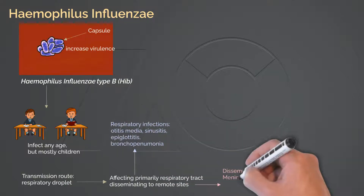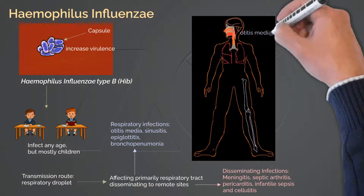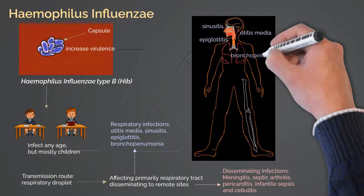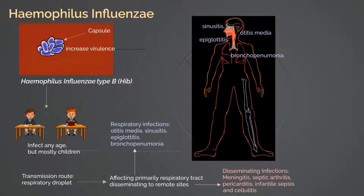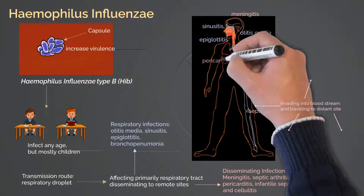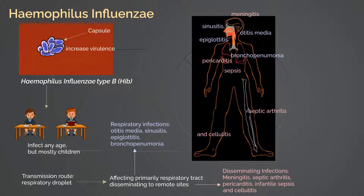There are two different groups of infections induced by HIB. The first type includes otitis media, sinusitis, epiglottitis, and bronchopneumonia. These infections result from Haemophilus Influenzae Type B spreading from its colony along the anatomical tract to infect the respiratory system. The second type results from invasion of bacteria into the bloodstream, traveling to distant sites. These infections affect body parts beyond the respiratory system: meningitis, septic arthritis, pericarditis, infantile sepsis, and cellulitis.